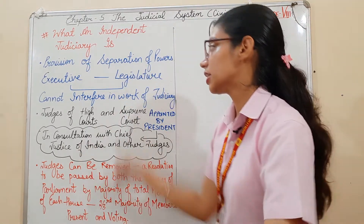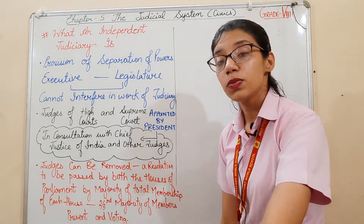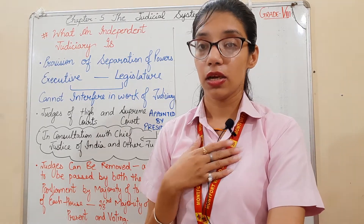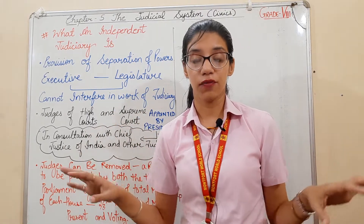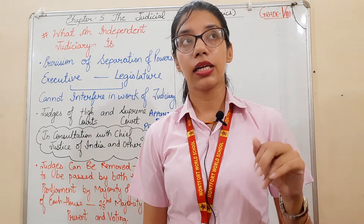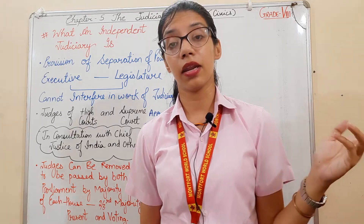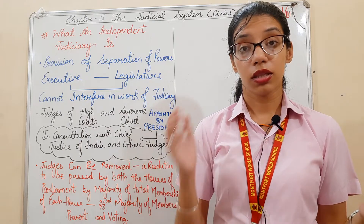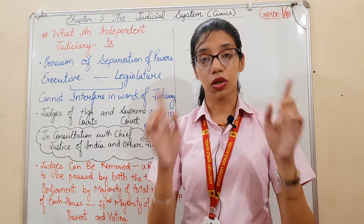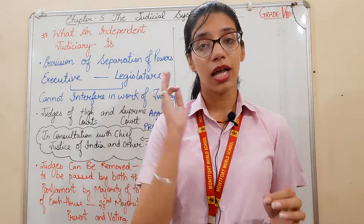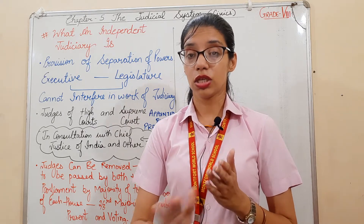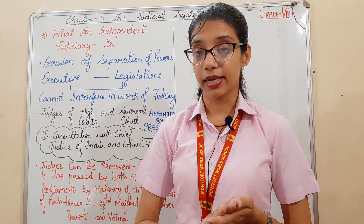There are many provisions for making the judiciary independent. It is very necessary to have an independent judiciary so that judges can discharge their duties properly — independently, without any fear, without any favoritism, and without any interference from the executive and legislature. However, this does not mean the judiciary will act in an arbitrary manner. There should be reason and logic behind every decision, and the judiciary must follow the Constitution in letter and spirit.